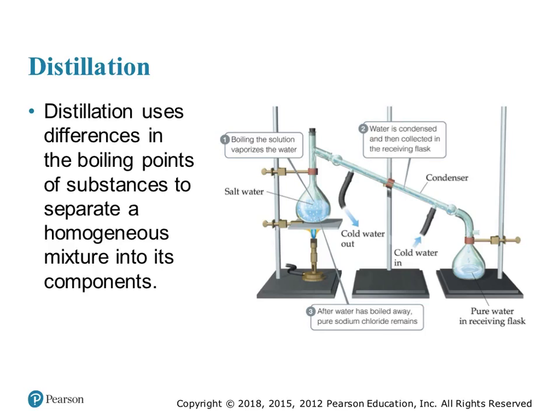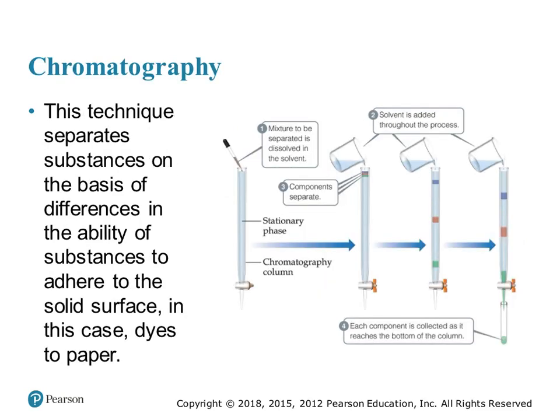Distillation is separation based on boiling point — I have a homogeneous mixture, meaning it's a solution, and I can separate it into its components based on their individual boiling points. Chromatography separates substances on the basis of their tendency to adhere to the solvent and by molecule size, then places a dye on the paper depending on what is being separated.